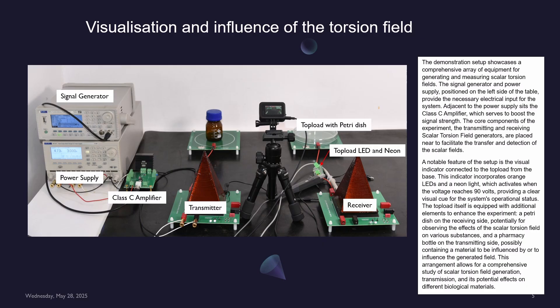The top load itself is equipped with additional elements to enhance the experiment. A Petri dish on the receiving side, potentially for observing the effects of the scalar torsion field on various substances, and a pharmacy bottle on the transmitting side, possibly containing a material to be influenced by or to influence the generated field. This arrangement allows for a comprehensive study of scalar torsion field generation, transmission, and its potential effects on different biological materials.